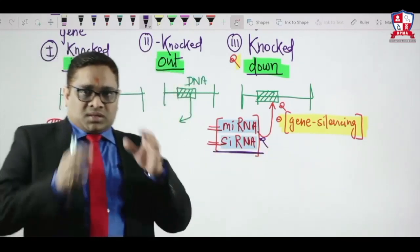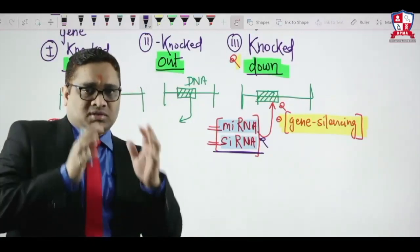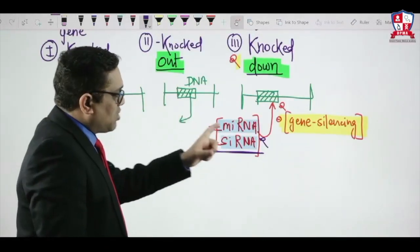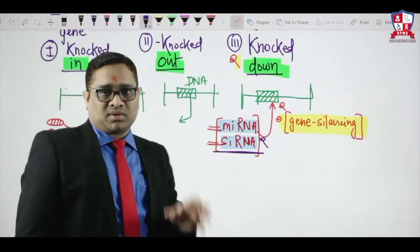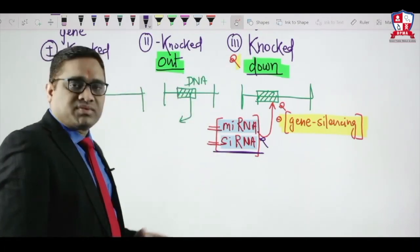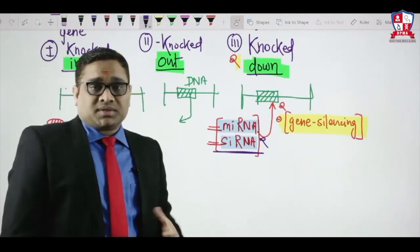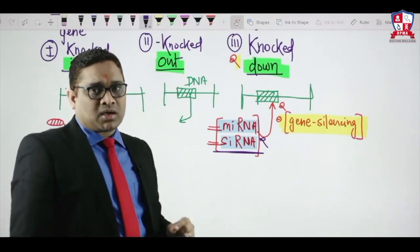Knockdown means that gene segment is neither added nor removed. It has been just suppressed, silenced with the help of microRNA or small interfering RNA. This is called knockdown technology. These things are very important to understand in context with microRNA or small interfering RNA. MicroRNA is very small, 21 to 30 nucleotides. That is why it is called microRNA.